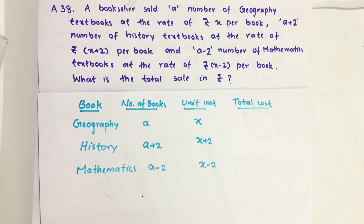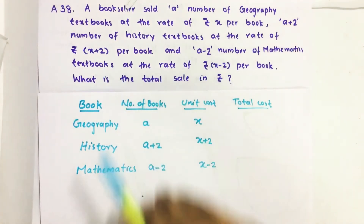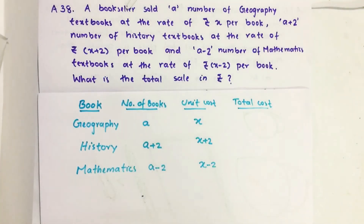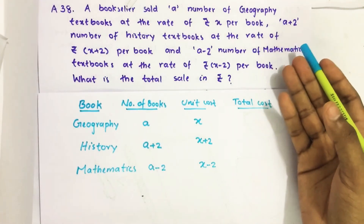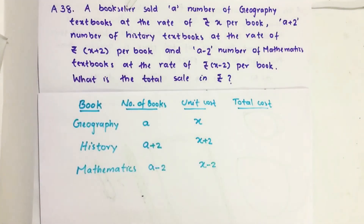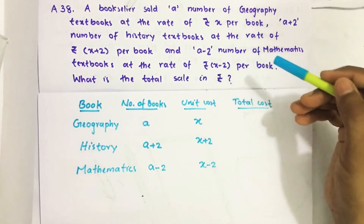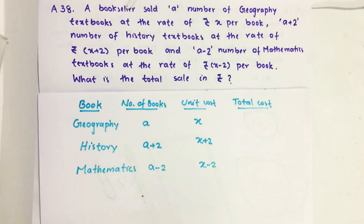A bookseller sold a number of geography textbooks at the rate of rupees x per book, then a plus two number of history textbooks at the rate of rupees x plus two per book, and a minus two number of mathematics textbooks at the rate of rupees x minus two per book. What is the total sale in rupees?